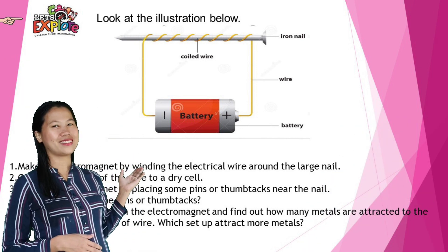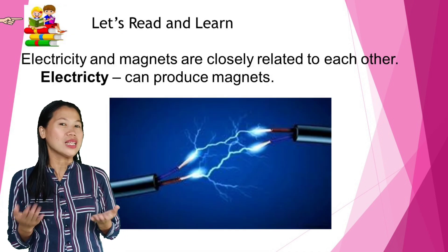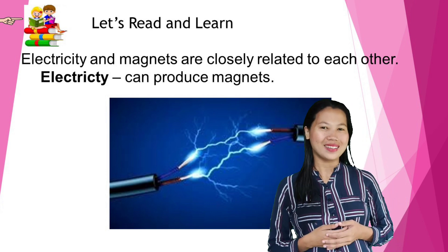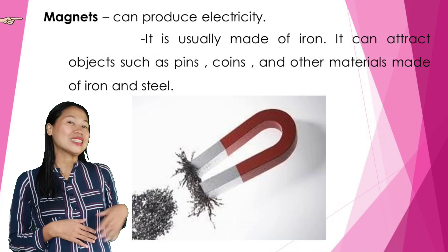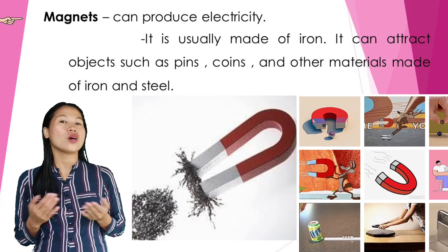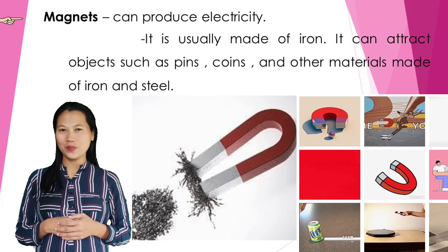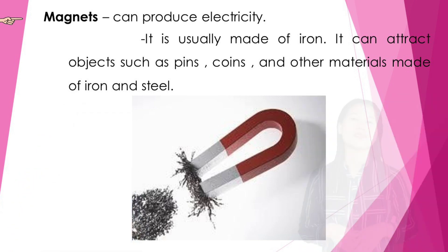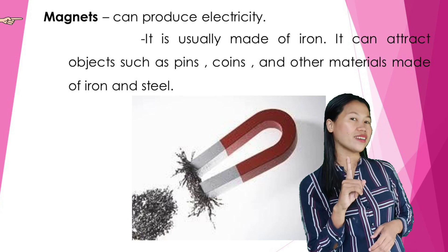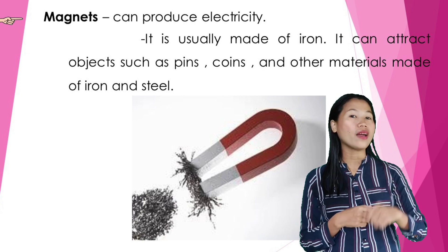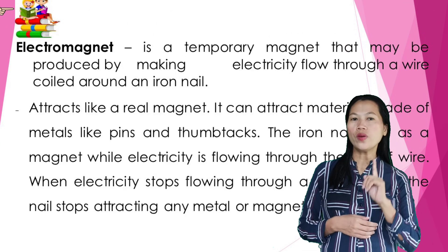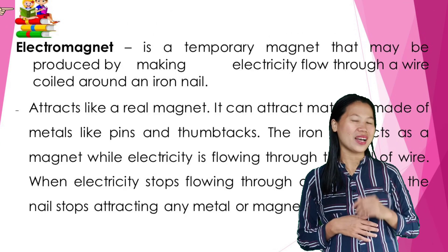Let's read and learn. Electricity and magnets are closely related to each other. Electricity can produce magnets, and magnets can produce electricity. It is usually made of iron and can attract objects such as pins, coins, and other materials made of iron and steel. A nail is not a magnet, but it can be turned into one by coiling a wire around it and then letting electricity flow through it.